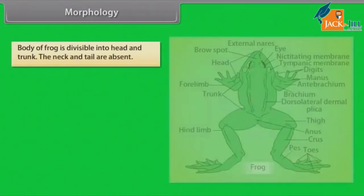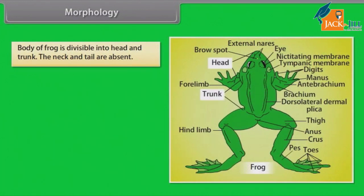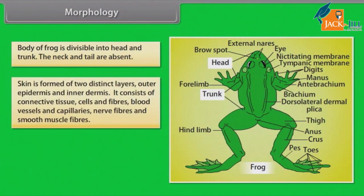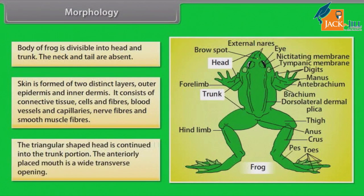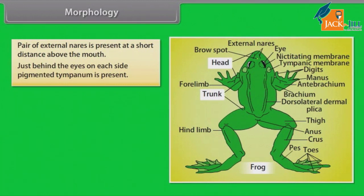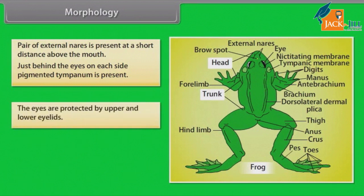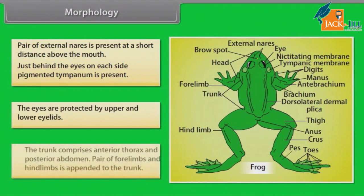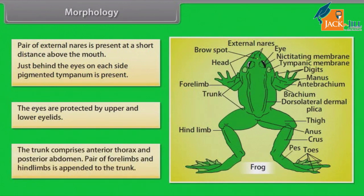Morphology: The body of a frog is divisible into head and trunk; the neck and tail are absent. The skin consists of two distinct layers — outer epidermis and inner dermis — containing connective tissue, blood vessels, capillaries, nerve fibers, and smooth muscle fibers. The triangular-shaped head is continued into the trunk. The anteriorly placed mouth is a wide transverse opening. A pair of external nares is present just above the mouth. Behind the eyes on each side, a pigmented tympanum is present. The eyes are protected by upper and lower eyelids. The trunk comprises anterior thorax and posterior abdomen.